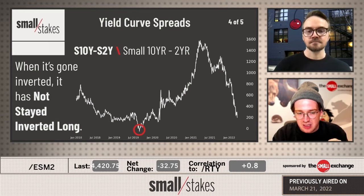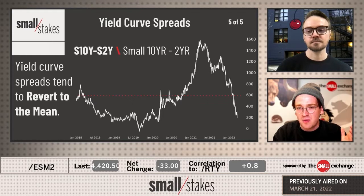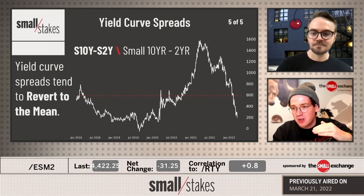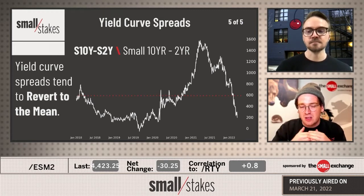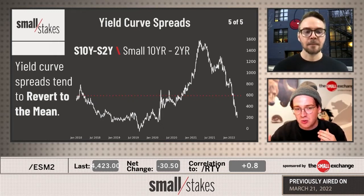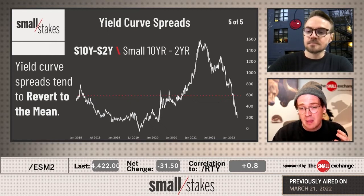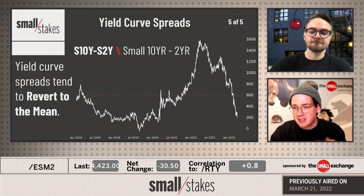You can trade these spread relationships like a basketball game where the favorite's lead expands to 20 or 30 points and you sell that spread expecting it to revert to six or ten. The same applies in interest rates — you could have sold ten-year rates and bought two-year rates when the spread was really high, it came back, and now it's near a low. If you're looking for mean reversion today, you'd buy the ten-year and sell the two-year, playing for this thing bouncing off near zero back to the mean.